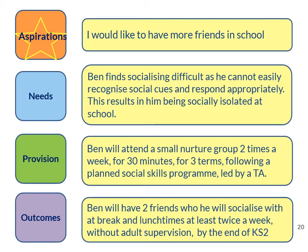In the outcome section, we see what everyone wants Ben to be able to achieve by the end of Key Stage 2: that he will have two friends who he will socialise with at break and lunch times at least twice a week without adult supervision. The outcome does not expect Ben to be playing with friends every day — this is partly because the outcome needs to be achievable, but also relevant. Maybe Ben doesn't want to play with others every day; maybe he likes his own company sometimes, but wants to learn how to play with others when he would like to.